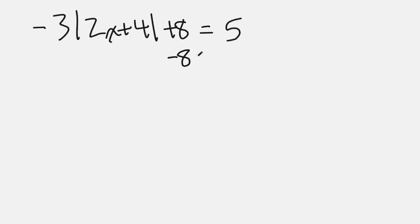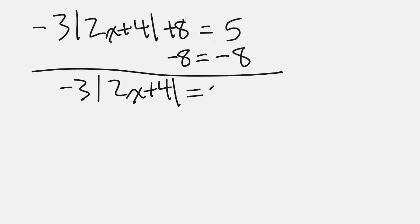So what do we do? First, we subtract 8 from both sides. Treat it just like we would a regular old first degree equation. So we have negative 3 times the absolute value of 2x plus 4 equals negative 3.